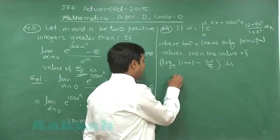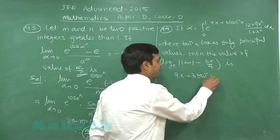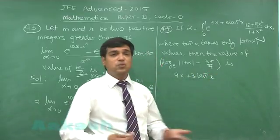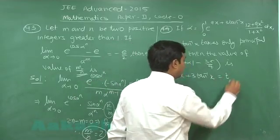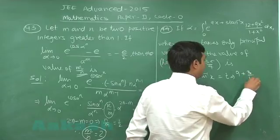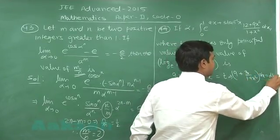When we have a term anything in power of e other than x, that is function of x, we usually go for the substitution. Let us say this is t. So, we have 9 plus 3 upon 1 plus x square dx as dt.